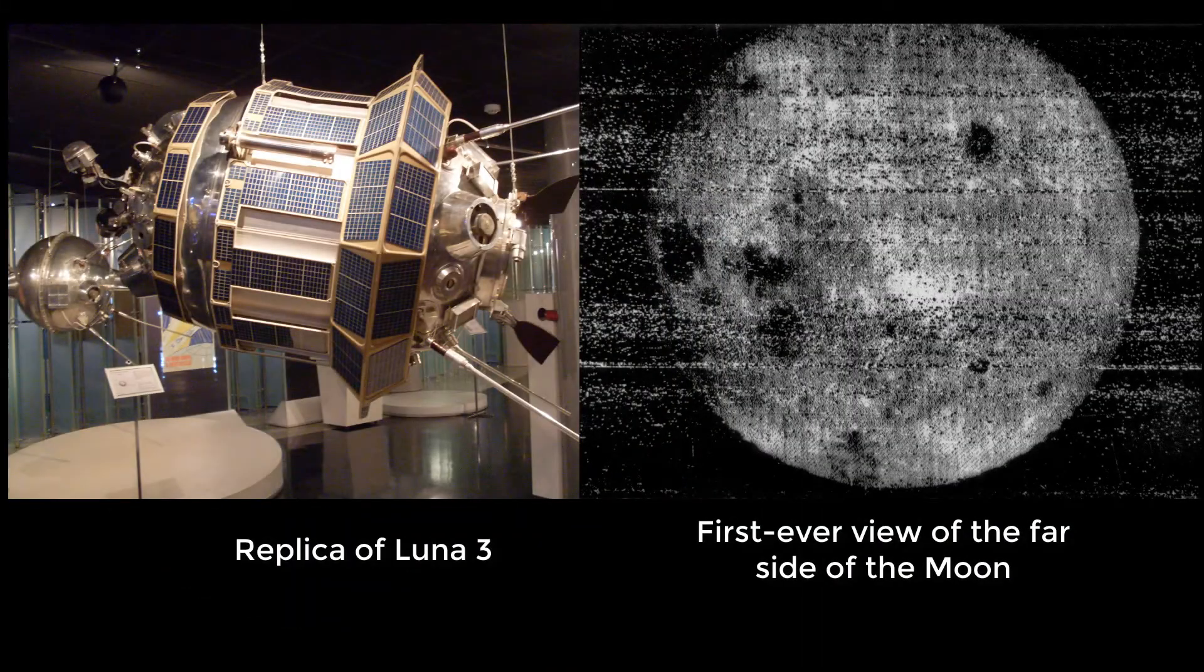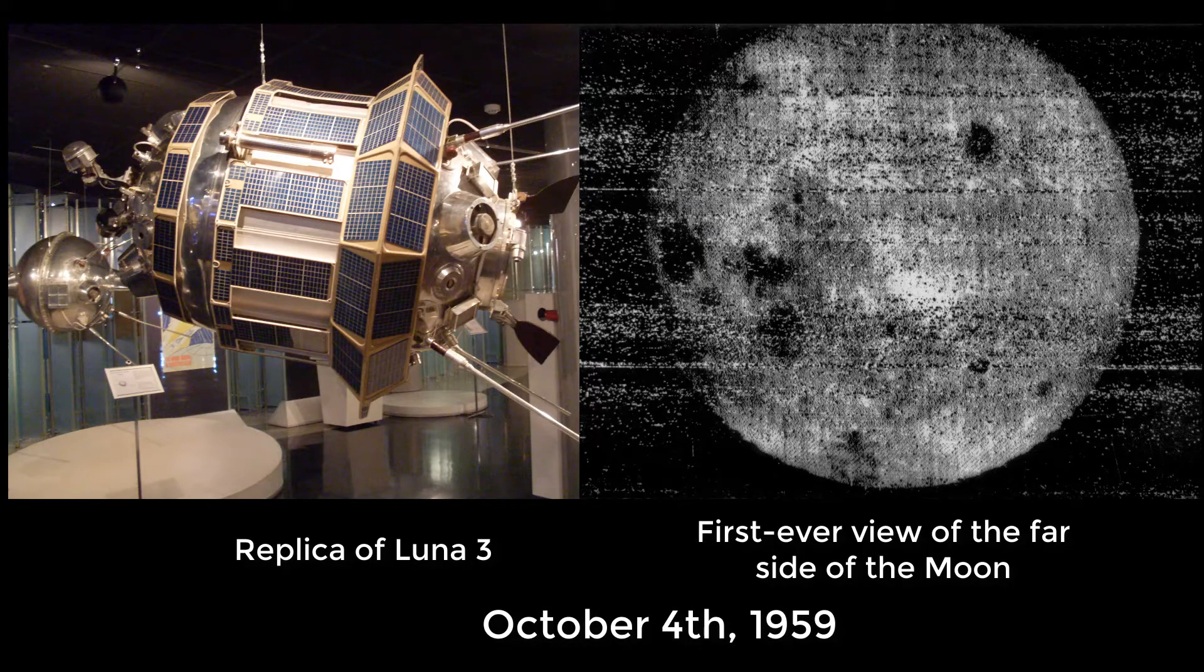The first time we did get to see the far side of the moon was thanks to the Soviet Union's Luna 3 mission, but that wasn't until October 1959.